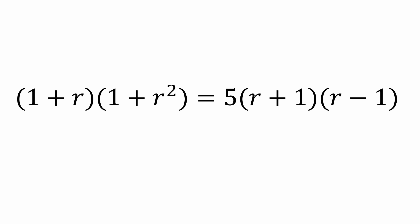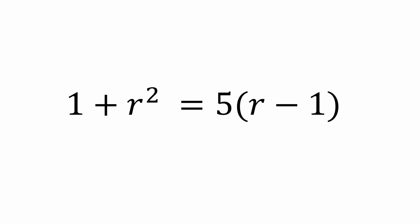Let's cancel out the 1 plus r factors from both sides of the equation. Since this is a geometric series, we can do this without worrying about dividing by zero since r can't equal negative 1. So now we're left with this. It looks like we've simplified things down to a quadratic equation. After distributing the 5, we can bring all terms to the left and simplify some more to get our quadratic in standard form.